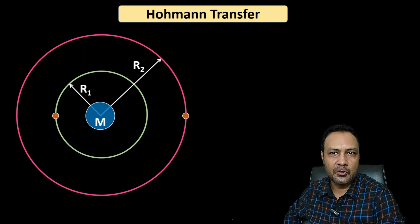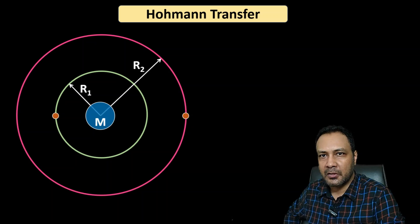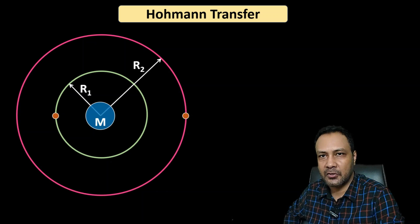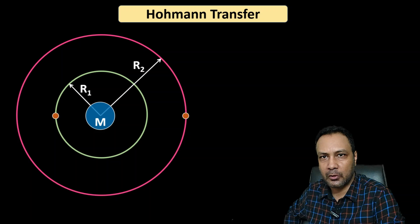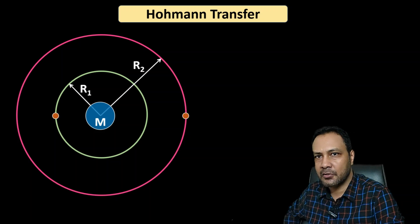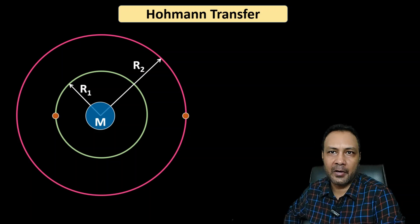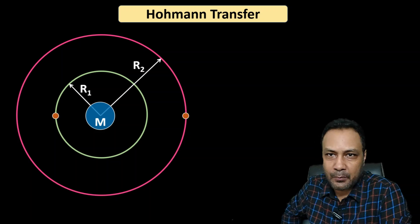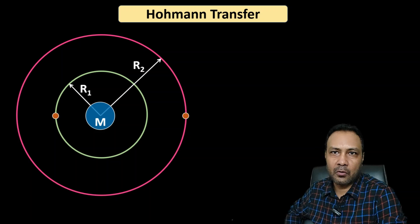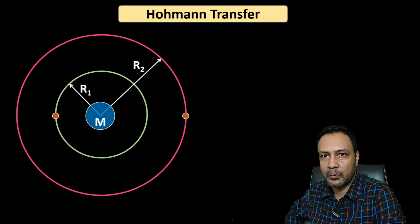Hey, this is Pradesh Chaudhary, Yokardam Guru. In this video we will learn how a satellite of a planet orbiting in a circular orbit can be transferred to another circular orbit of higher radius in the same plane, and that maneuver is called the Hohmann orbit transfer maneuver.